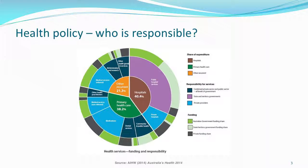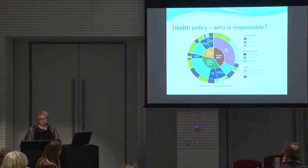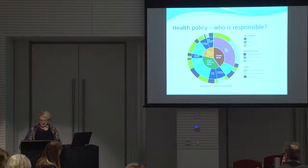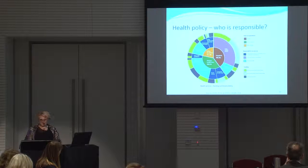Under Australia's federation, the Commonwealth plays a strong role in national policymaking but generally funds rather than provides health services. Its key roles are in funding and administering Medicare and the Pharmaceutical Benefits Scheme, and in funding public hospitals and population health programs, which it does along with the states and territories. The states and territories, on the other hand, play a strong role in administering and regulating public hospitals and community-based health services.